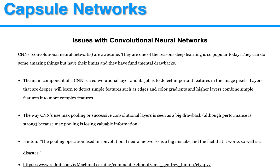Now we've covered a brief historical look and a possible better-performing algorithm, so we need to keep an eye on it since it will surely lead to new research and algorithms. In order to better understand the capsule network and its benefits, we actually have to first look at convolutional neural networks. There is no doubt convolutional neural networks are awesome, and they are one of the reasons deep learning is so popular today — they can do some amazing things, but they do have their limits and drawbacks.